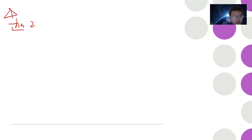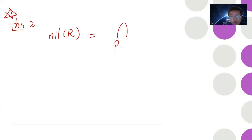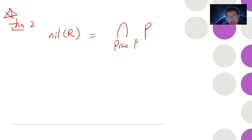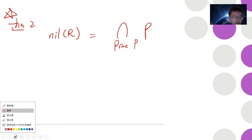The most important property is that the nilradical of a ring equals the intersection of every prime ideal p. That is, nil(R) = ∩ p over all prime ideals p. This gives us a connection to algebraic geometry, which I'll discuss later.